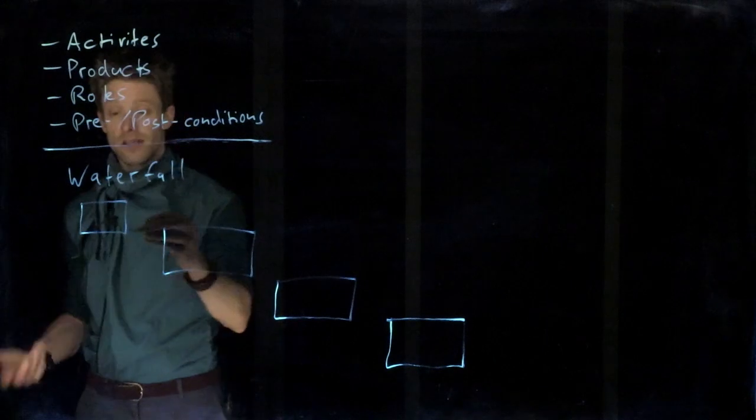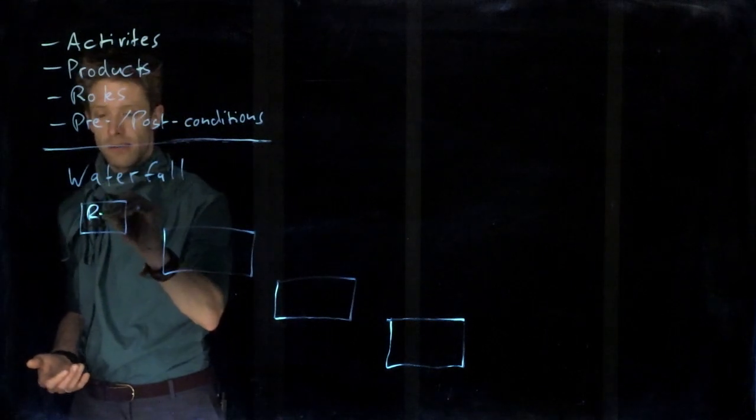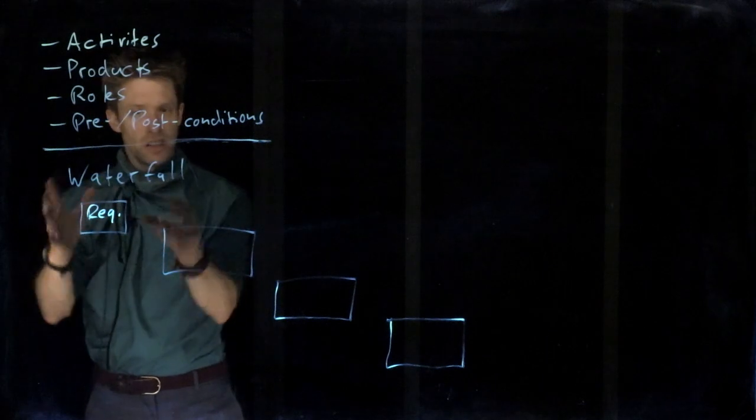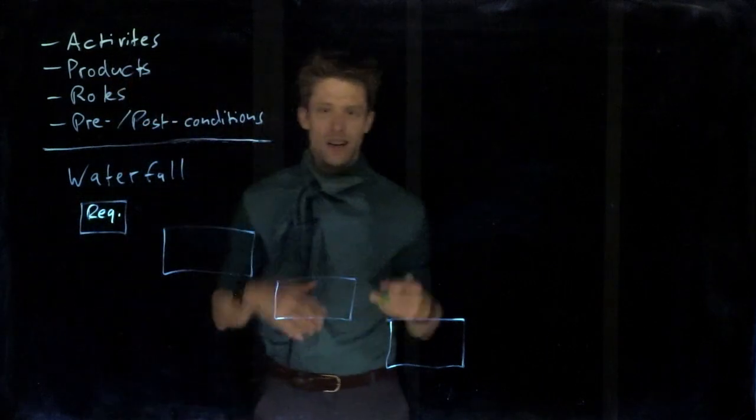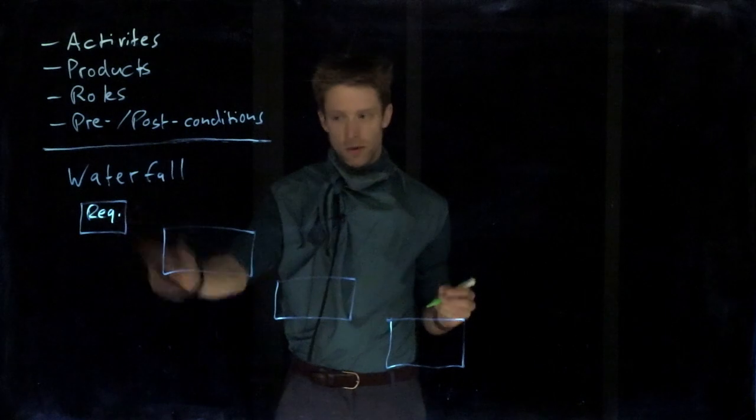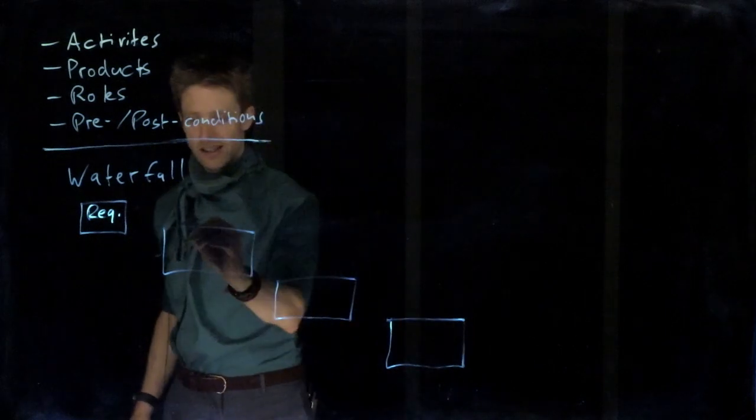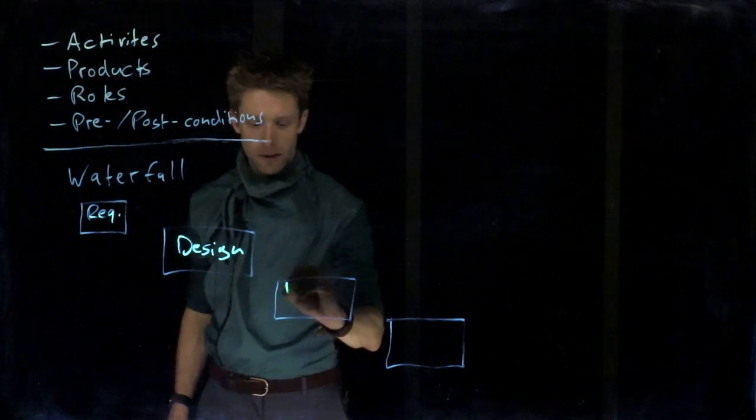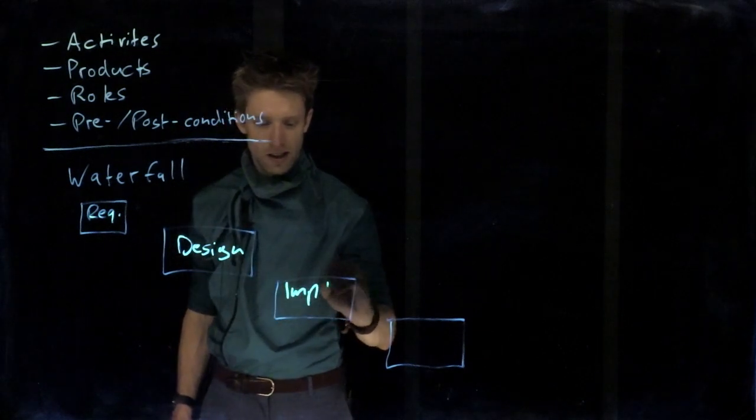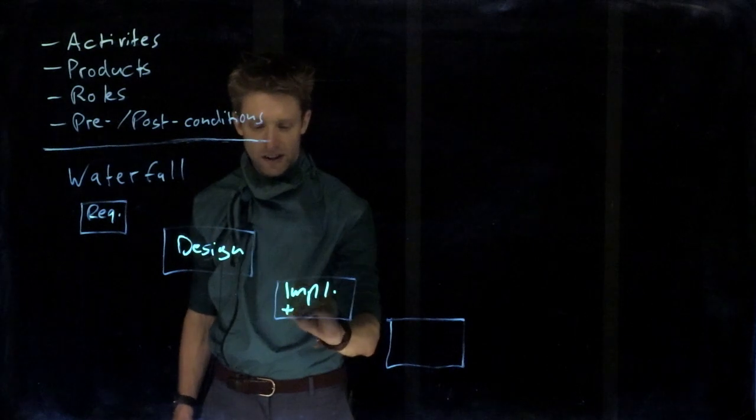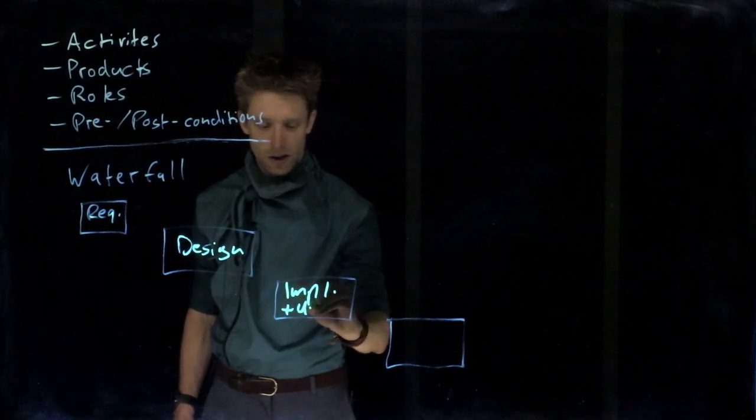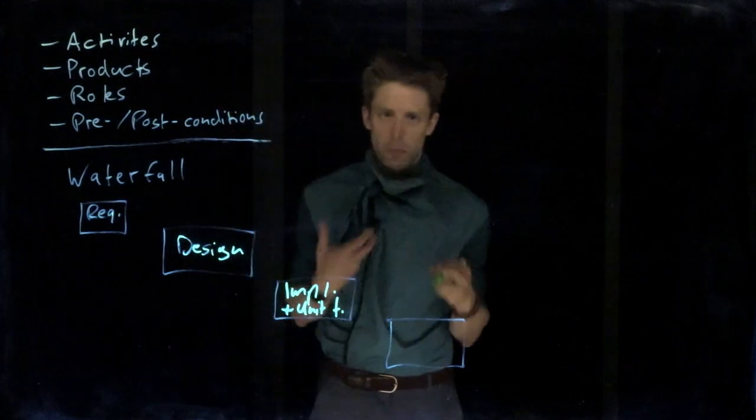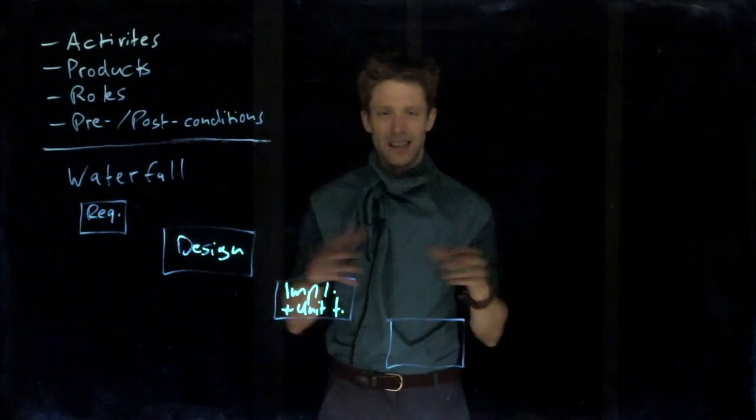And the activities we are doing is requirements elicitation, requirements specification, all the activities around figuring out and specifying what the requirements are. Then we are doing design of our system. We do implementation, and very often in this step you also talk about unit testing, so testing small parts of our system like a class or a function.